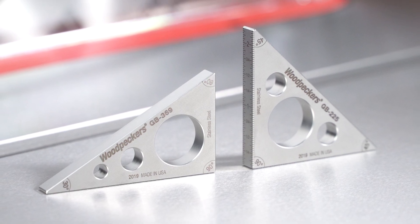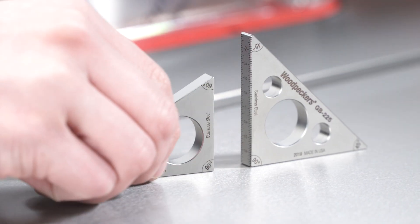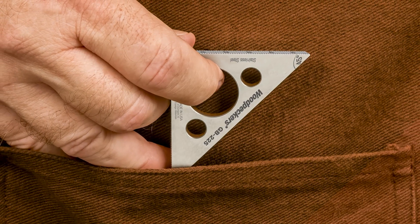Woodpecker's pocket-sized stainless steel gauge blocks provide fast, easy setup at all of your machinery. They're always ready right in your pocket.